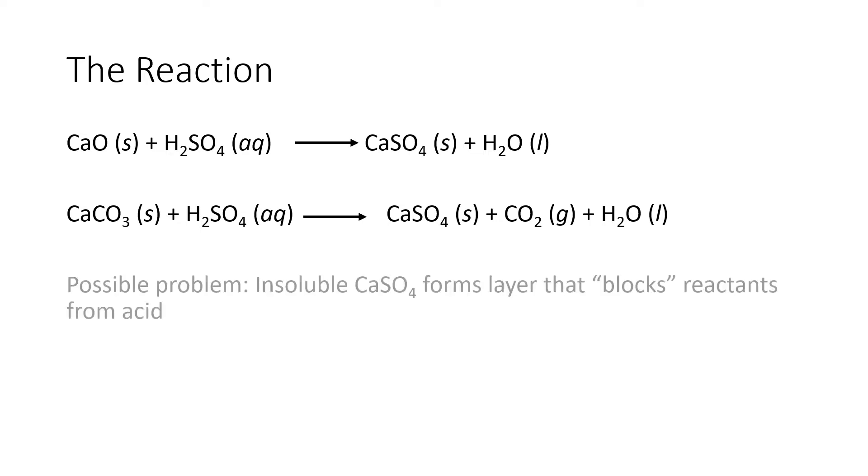There are problems you can encounter. For example, as the calcium sulfate begins to form, it is insoluble, and what could happen is it might form a layer that blocks the reactants from reacting with the acid. How do we solve this? One thing we're going to do is use concentrated sulfuric acid. That means we're going to hit this mixture with a lot of sulfuric acid to overcome any blockage from the calcium sulfate product.